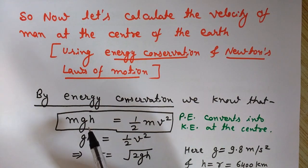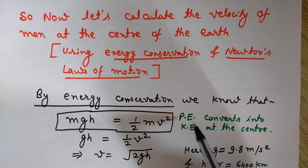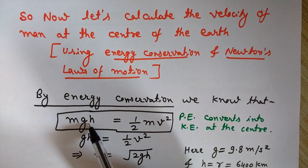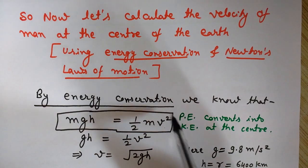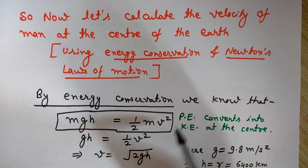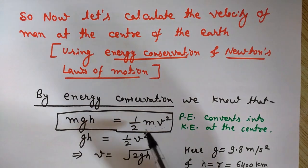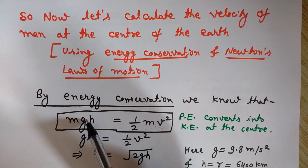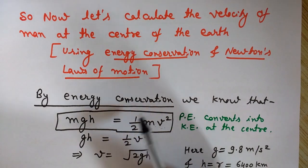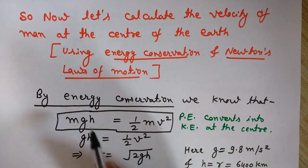We will use two techniques: Newton's laws of motion and energy conservation. By energy conservation, the potential energy mgh at the pole converts entirely to kinetic energy ½mv² at the center, since height h is zero there. Cancelling m from both sides: gh = ½v², giving v = √(2gh). Here g is 9.8 m/s² and h is the radius of the earth, which is 6400 kilometers — converting to meters gives the maximum velocity at the center.